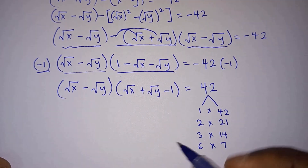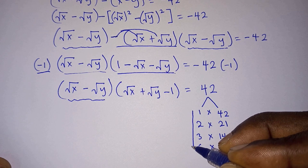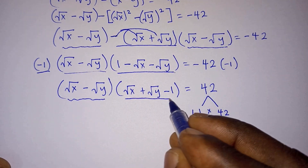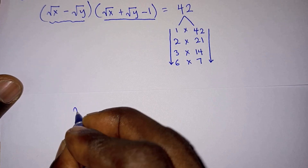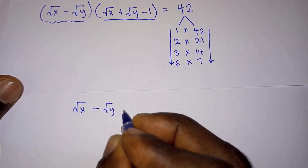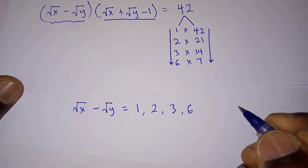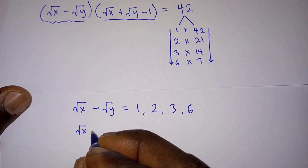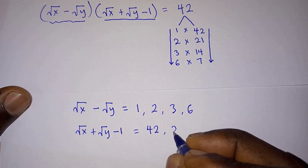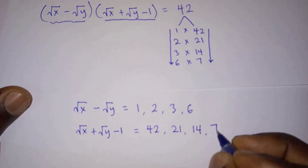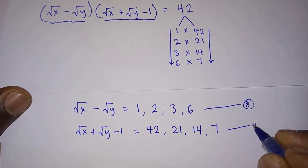We set up the factor pair equations. Let equation-star be: √x − √y equals 1, 2, 3, or 6 respectively. And equation-hash be: √x + √y − 1 equals 42, 21, 14, or 7 respectively, for each corresponding factor pair.